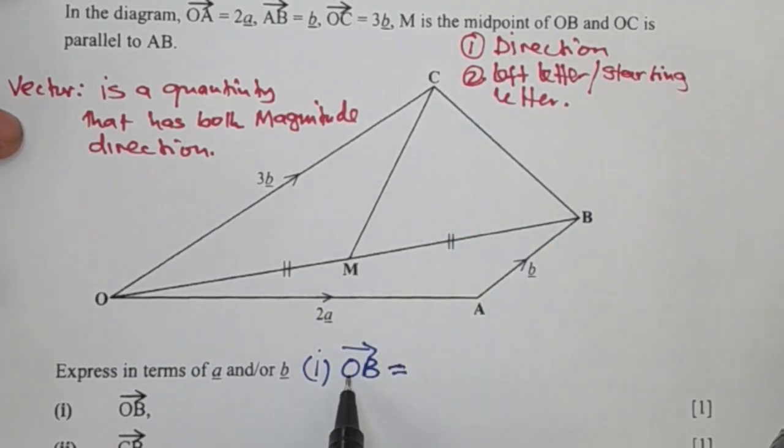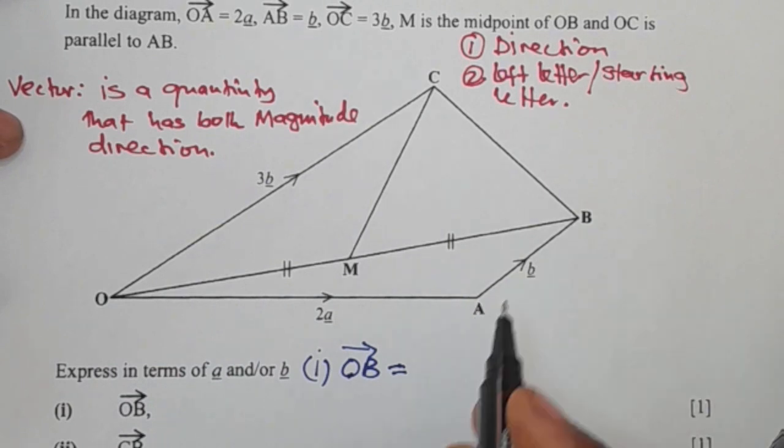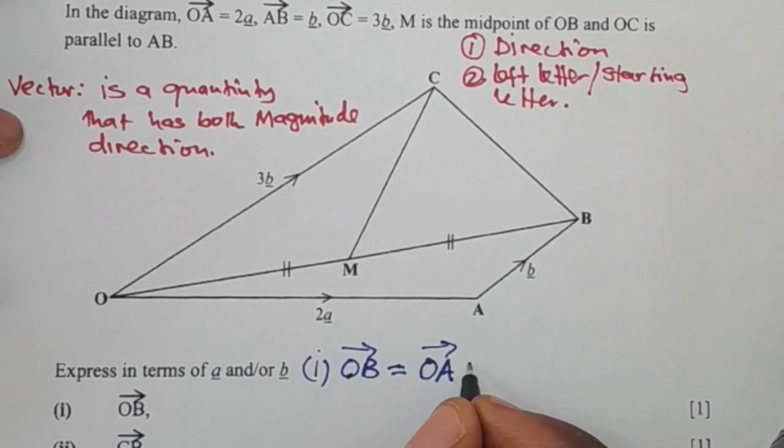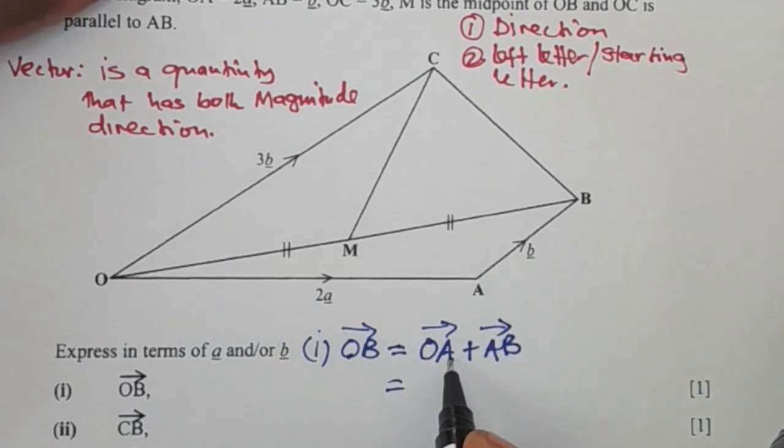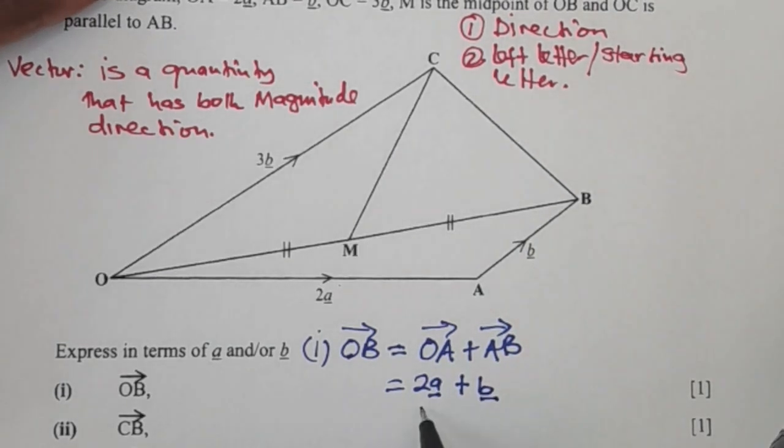So meaning we're going to start our movement from O, from O to A, then from A to B. So for us to find OB, we're going to say we'll move from OA plus AB. Then OA is 2a, plus AB is b. So meaning, this is the vector they wanted.